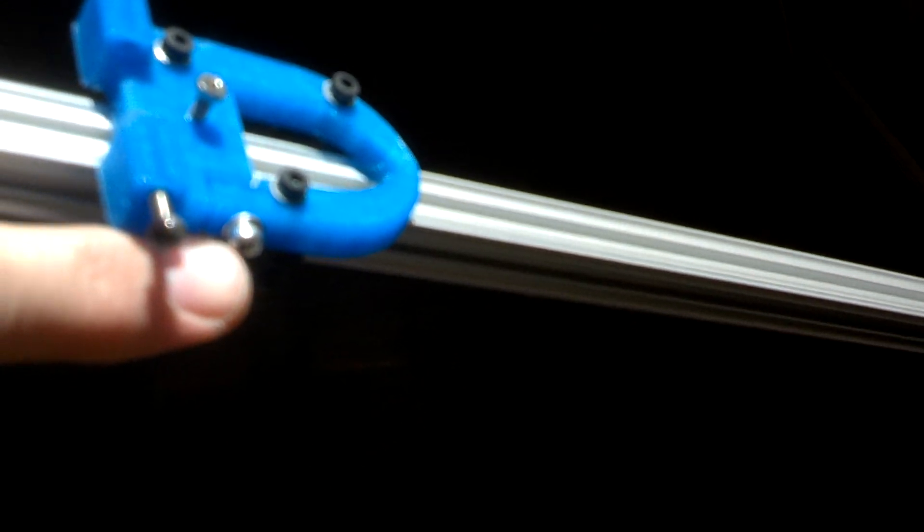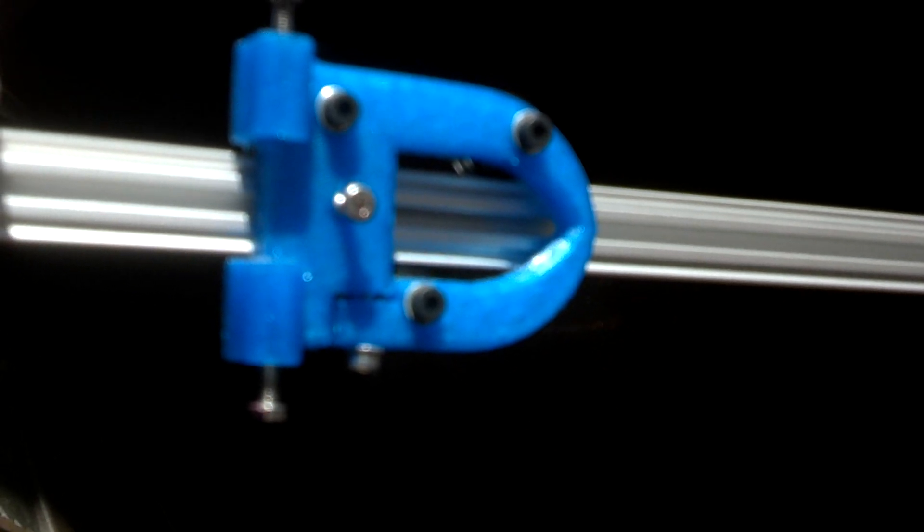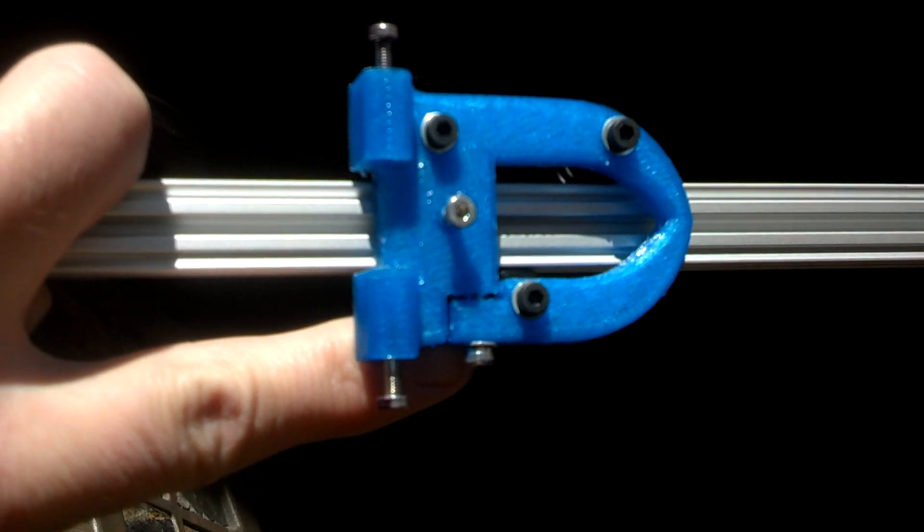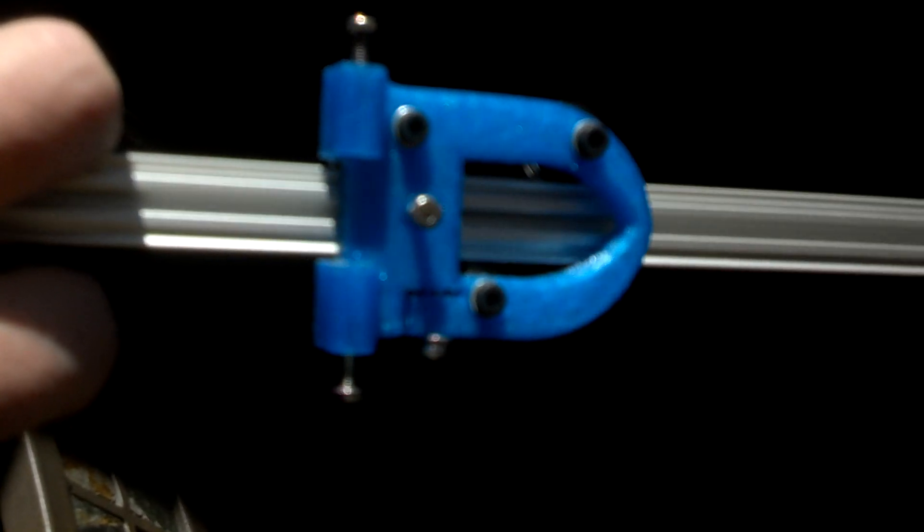That right there is how you adjust the tension. You can see it's got a little bit of a gap right there. And that allows you to adjust the tension on the third pulley on the one side. Pretty straightforward.